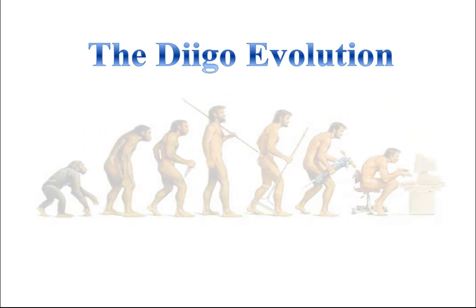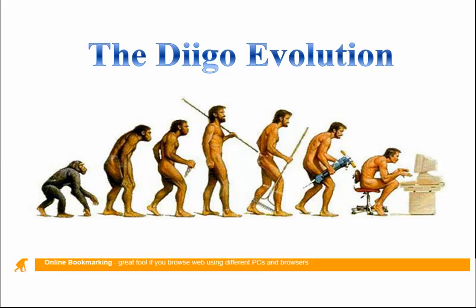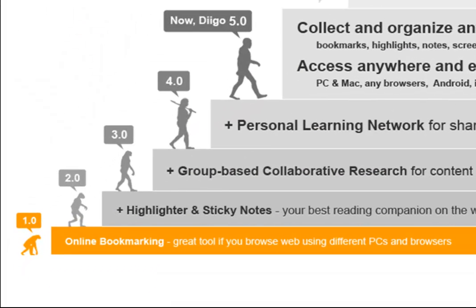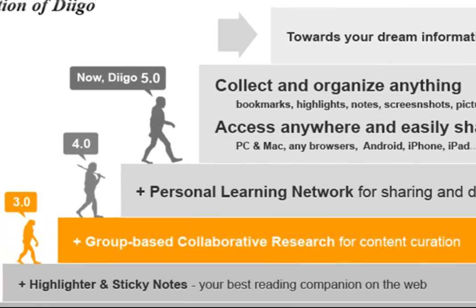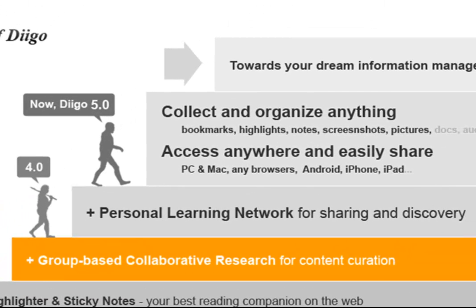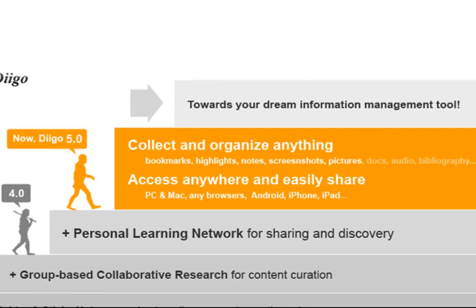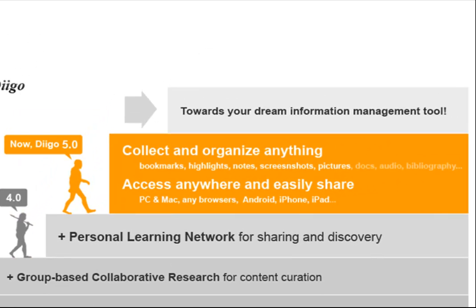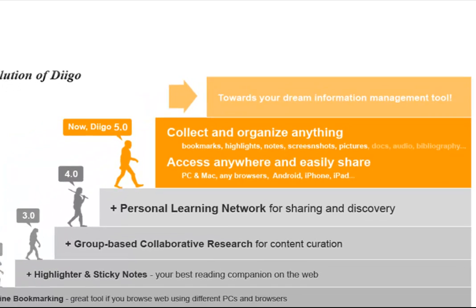Digo has evolved over the past few years from a simple online bookmarking tool, to incorporating web annotation, to enabling knowledge sharing and group-based collaborative research, and finally moving closer to our ultimate vision: to provide our users with the best cloud-based information management tool for collecting, organizing, and accessing any information anywhere.